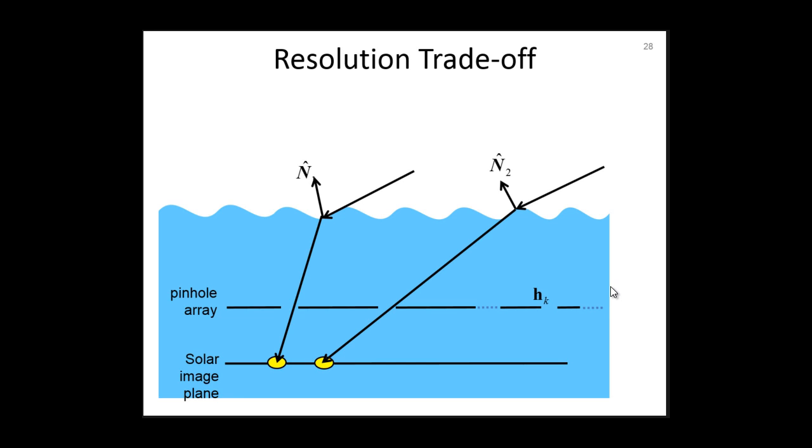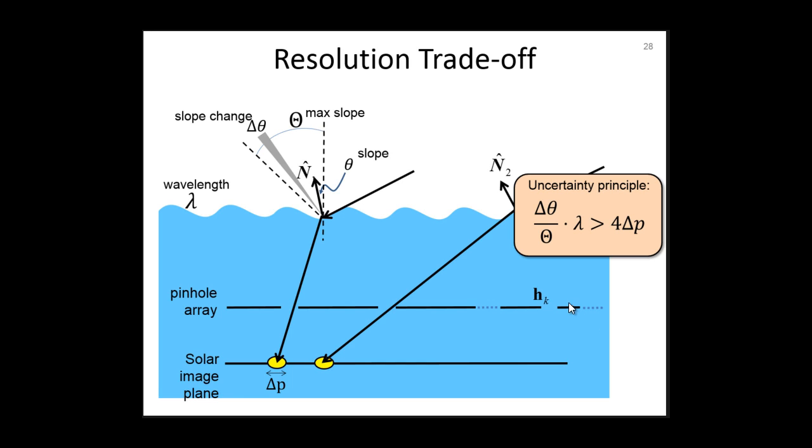There are some design trade-offs. Let us look at these two sun rays that form these two sun blobs where the blob size is delta_p. We need to sample the slopes densely enough, but the blobs should not overlap. On the other hand, the system needs to be sensitive enough to measure also small slopes. Suppose that the slope angle is theta, the maximum slope is denoted by capital theta, the small change in the slope is delta theta, and the wavelength is lambda. Then we derive this trade-off formula. The relative wave slope angular resolution can be trade-off for spatial resolution before errors from aliasing and correspondence take effect. The details are in the paper.